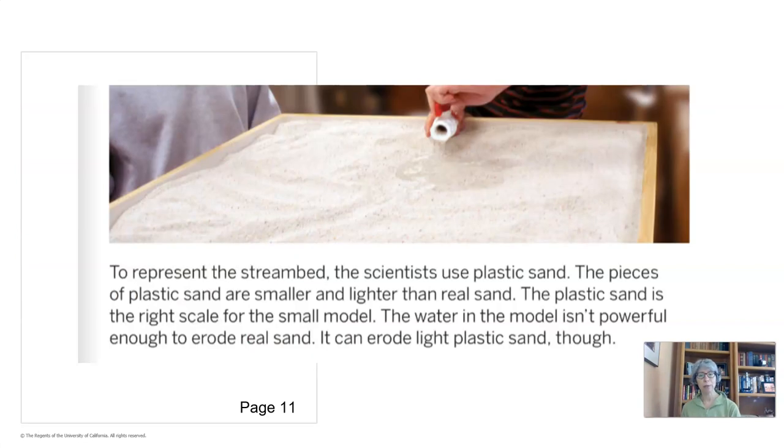All right, some of you chose page 11. To represent the stream bed, scientists use plastic sand. The pieces of plastic sand are smaller and lighter than real sand. The plastic sand is the right scale for the small model. The water in the model isn't powerful enough to erode real sand. It can erode light plastic sand though. So here we're trying to recreate the action of a stream by using water that flows lightly and sand that's plastic.